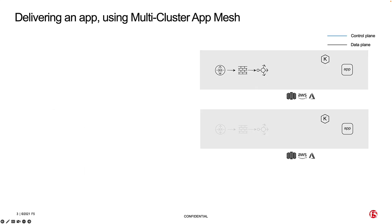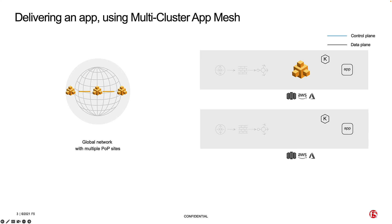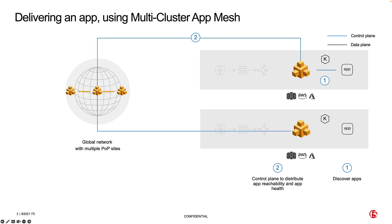Delivering an app using the F5 distributed cloud to provide a multi-cluster mesh of your app is pretty straightforward. Whether your app is hosted in AWS, Azure, GCP, or even on-prem, it's very easy to use the global network to connect all of your different endpoints. Using the distributed cloud distributed apps mechanism, you can discover apps already running within your cloud, and you can control how external access is able to reach those apps, including external access from within another internal network.